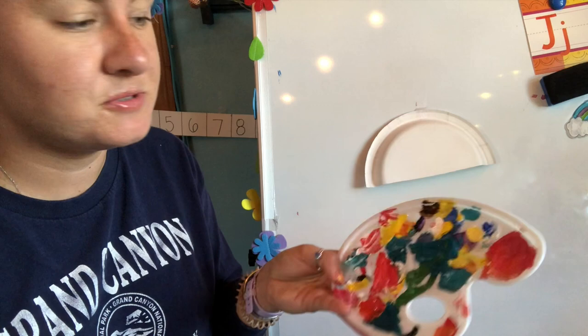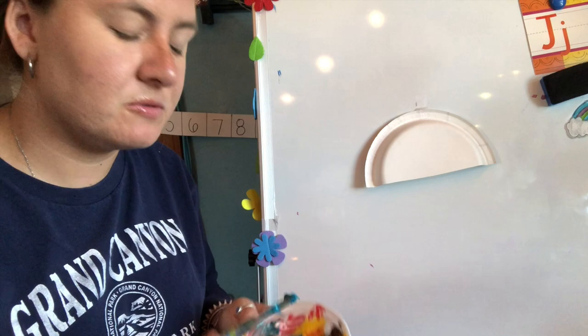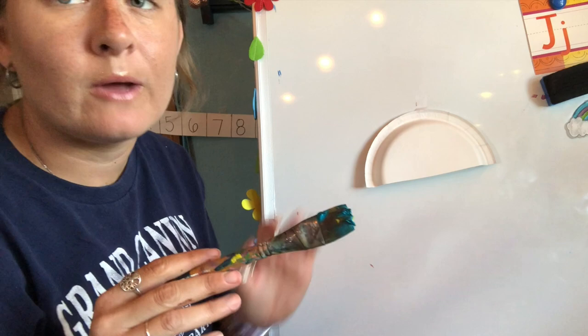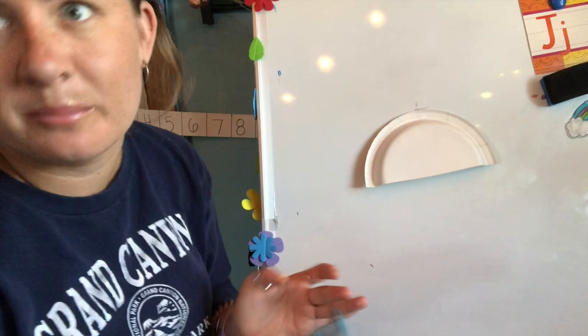This is my paint palette. Do you see all the painting I do? I love to paint. Here we go. So I have my teal and I'm going to paint my plate. Remember, we have to be careful when we paint. Are we going to try and paint all over the place? No. You have to be very careful and just paint your plate or whatever you're painting. Your paper.